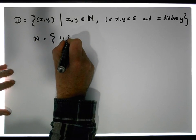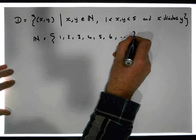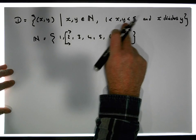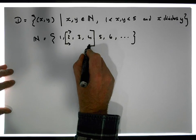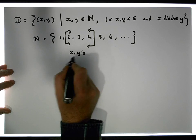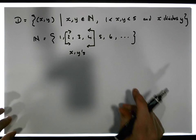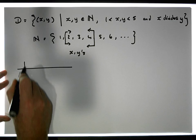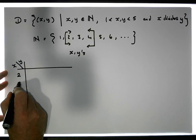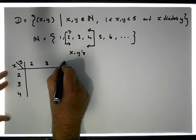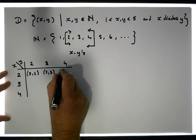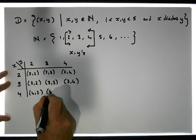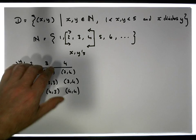The natural numbers are 1, 2, 3, 4, 5, 6, and so on. The condition that x and y are bigger than 1 and less than 5 means the possible candidates are 2, 3, and 4. Let's first do the full cross product: the ordered pairs are (2,2), (2,3), (2,4), (3,2), (3,3), (3,4), (4,2), (4,3), and (4,4). Those are all the possible things that could be in D so far.